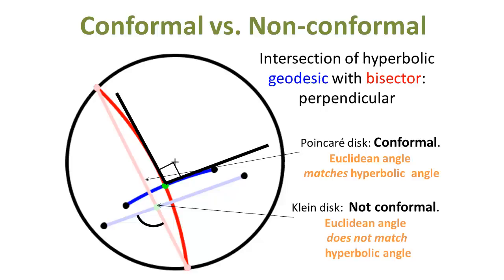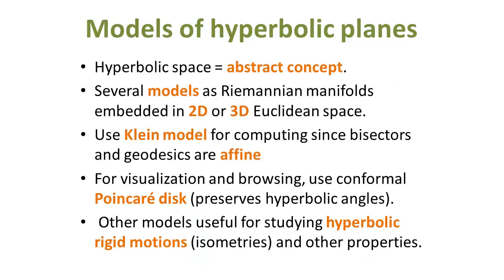Klein model is not conformal, but well-suited for computation. Hyperbolic geometry is an abstract geometry fulfilling the axioms of hyperbolic geometry. There exist several models of the hyperbolic plane described as Riemannian manifolds embedded in 2D or 3D Euclidean space. Klein model is used for computing geometry structures and Poincaré model for visualization. Other models also have their own merits.